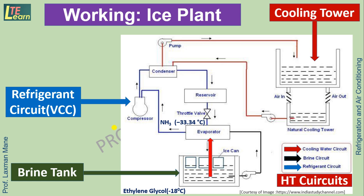Low-pressure ammonia vapor from the evaporator is passed to the compressor, where it is compressed to high-pressure, high-temperature vapor. It is then passed to the condenser, where it rejects heat to the cooling water circuit and is condensed. The liquid refrigerant is then passed to the expansion or throttle valve.